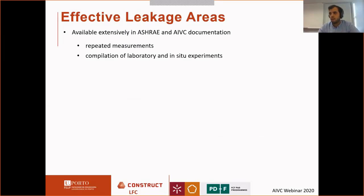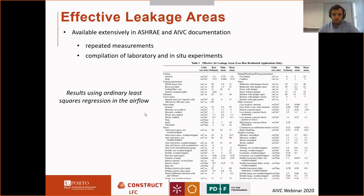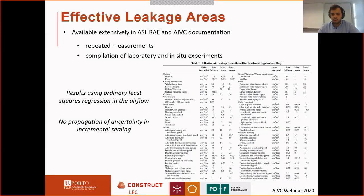Effective leakage areas are extensively available in ASHRAE and IEA documentation. They are the result of repeated measurements and compilation of laboratory or in-situ experiments. But when they are derived in a reductive sealing way, normally only ordinary least squares regression is used for the airflow — they don't take into account the variance in the pressure difference, nor the propagation of uncertainty through these incremental steps.